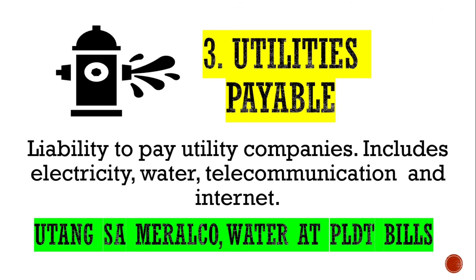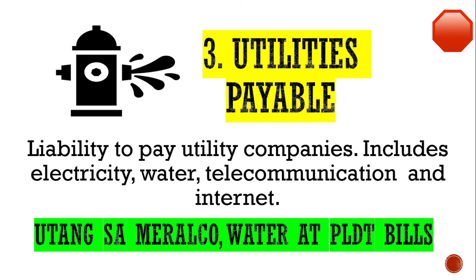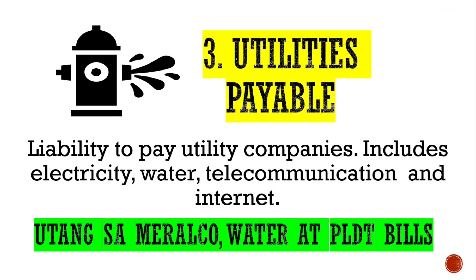Utilities payable — liability to pay utility companies, includes electricity, water, telecommunication, and internet. Ito yung mga utang natin sa mga company na tulad ng Meralco, ng mga water district, o kaya man ay ng PLDT. Karaniwan kasi na natatanggap natin yung bill nila after the end of the month. So for that particular month na ginamit natin yung mga utilities na yun, hindi pa natin sila nababayaran, kaya i-re-record natin sila as utilities payable.